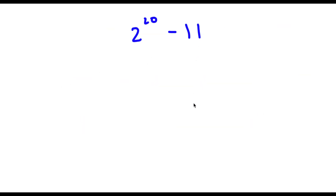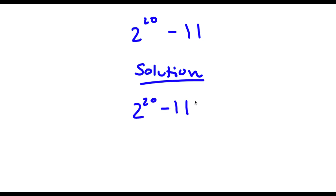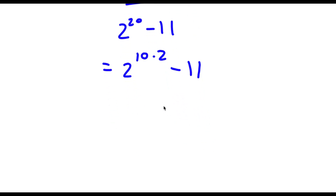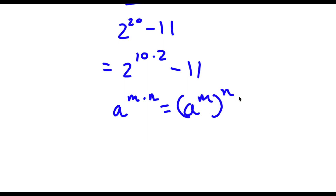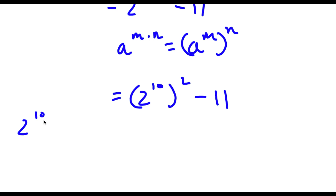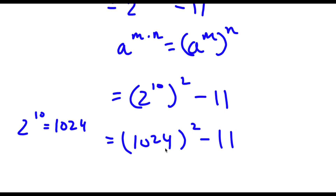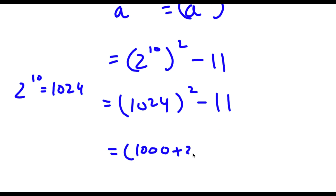Now I have 2 to the power of 20 minus 11. I rewrite 2 to the power of 20 as 2 to the power of 10 times 2, since 20 equals 10 times 2. Using the rule a^(m times n) equals (a^m)^n, this equals (2 to the power of 10) to the power of 2. Since 2 to the power of 10 is 1024, I have 1024 squared minus 11. I can rewrite 1024 as 1000 plus 24, so I have (1000 plus 24) squared minus 11.